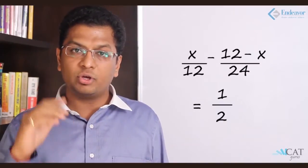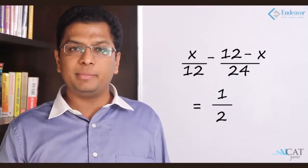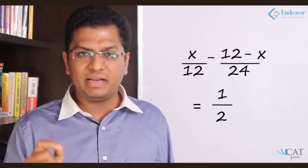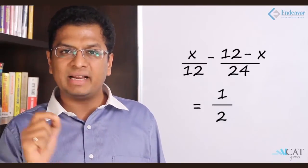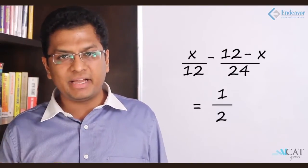There are total of 12 pipes. We don't know how many and where. So let's assume x is the number of fill pipes. The total work done by x pipes is x upon 12. How many are the empty pipes? If fill pipes are x, empty pipes will be 12 minus x. So 12 minus x upon 24 is the work done by the emptying pipes.